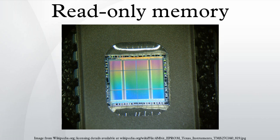Types. Semiconductor-based, classic mask-programmed ROM chips are integrated circuits that physically encode the data to be stored, and thus it is impossible to change their contents after fabrication. Other types of non-volatile solid-state memory permit some degree of modification. Programmable read-only memory, or one-time programmable ROM, can be written to or programmed via a special device called a PROM programmer.